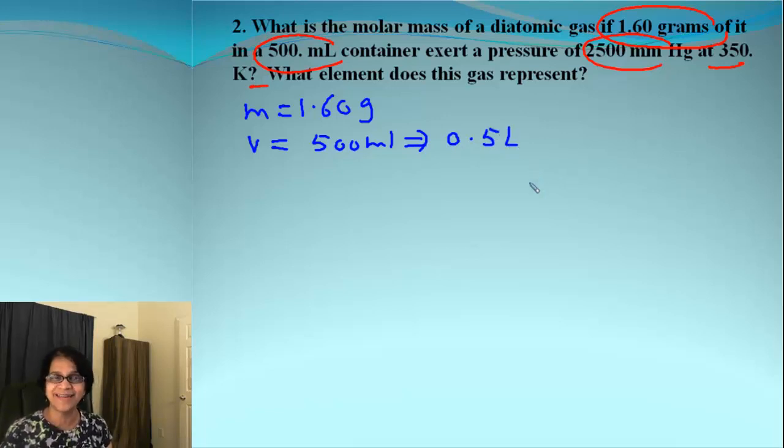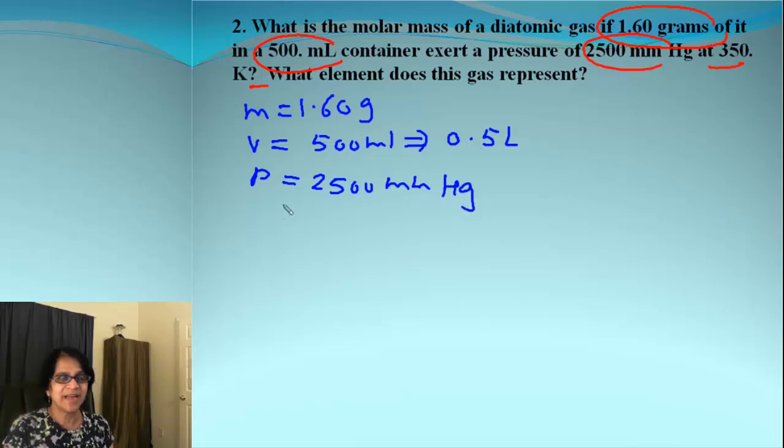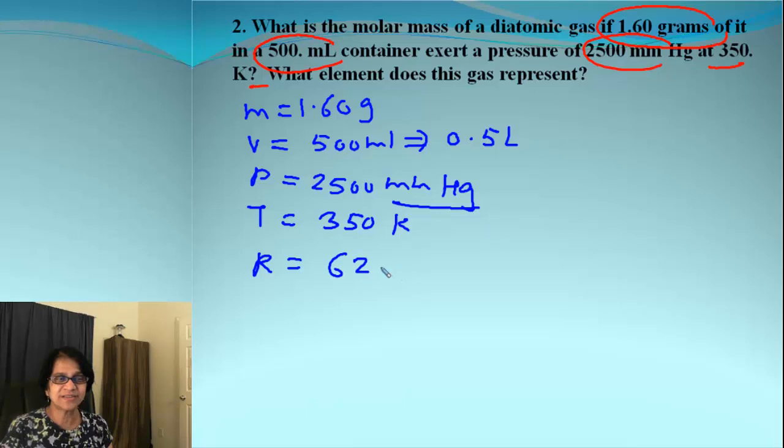And then we get pressure, 2500 millimeters of mercury. And we have temperature as 350 Kelvin. Now what's the R value we need to get? Since this is millimeter of mercury, which is equal to torr, R value is 62.4. And then we are going to plug the values to find out the answer.